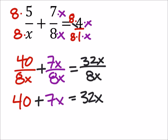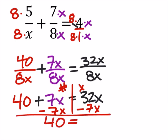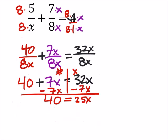Now we've got x's on both sides, and that's okay. What we need to do is move them so they're all on the same side. I'm going to put the x's on the right and the numbers on the left, so I'm going to subtract this seven-x so that I only have numbers on the left side. This gives me forty, and thirty-two-x minus seven-x is twenty-five-x. At this point I would divide both sides by twenty-five, just so I have x, because twenty-five divided by twenty-five is one.